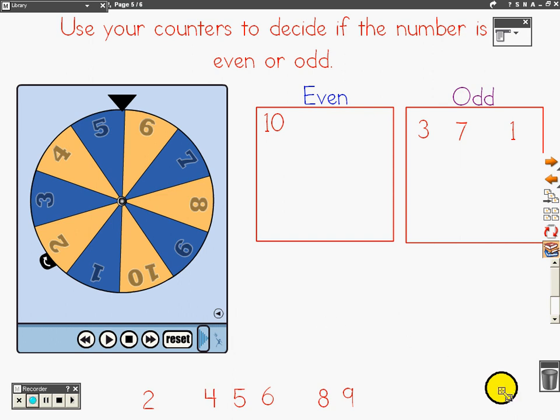Let's try the number five. The number five does not have a partner for each one, so it's odd.